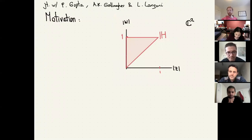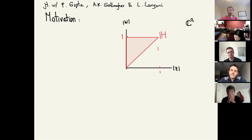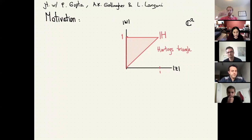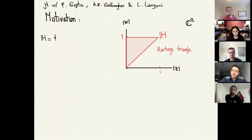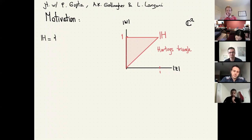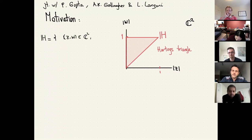What we were interested in was to find some specific reproducing kernel formulas for the Hartogs Triangle. The Hartogs Triangle is a classical object in several complex variables. Let me remind you of what the Hartogs Triangle is. Geometrically, as you can see here, it is the set where the modulus of Z is less than the modulus of W, which is less than 1.